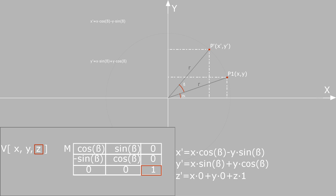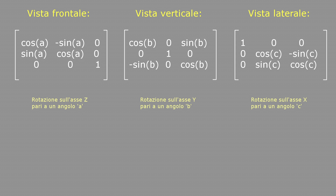Ruotando un solido sull'asse Z cambiano solo X e Y, mentre le coordinate Z rimangono tali e quali. Intuitivamente è perfetto poiché l'asse Z di un device è quello che idealmente cade perpendicolare sullo schermo: vedere ruotare un solido su quell'asse comporta vedere i suoi vertici ruotare in un cerchio e la Z non cambia. Le altre matrici di trasformazione, riferite alla rotazione sull'asse X e sull'asse Y, avranno rispettivamente la colonna [0,0,1] come prima o come seconda colonna, tale che solo le coordinate X o solo le Y rimangano invariate.